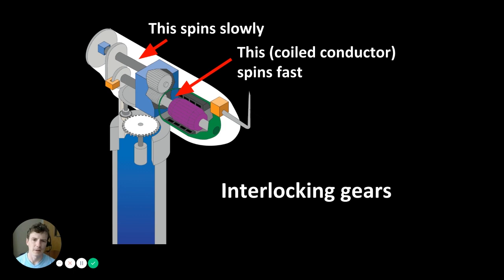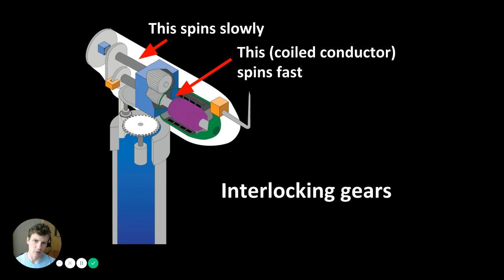If you've ever seen wind turbines operate, one curious thing is that they appear to be moving pretty slowly. The reason is that there are interlocking gears — the outer gear connected to the turbine spins slowly, but it's interlocked with another gear that spins very quickly, which is connected to a coil conductor spinning within a magnetic field to generate electricity.